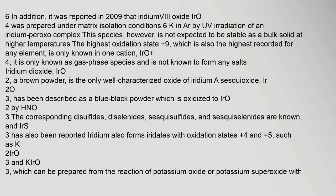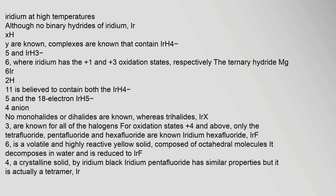Iridium also forms iridates with oxidation states 4 and 5, such as K2IrO3 and KIrO3, which can be prepared from the reaction of potassium oxide or potassium superoxide with iridium at high temperatures. Although no binary hydrides of iridium IrxHy are known, complexes are known that contain IrH4^5- and IrH3^6-, where iridium has the +1 and +3 oxidation states, respectively.